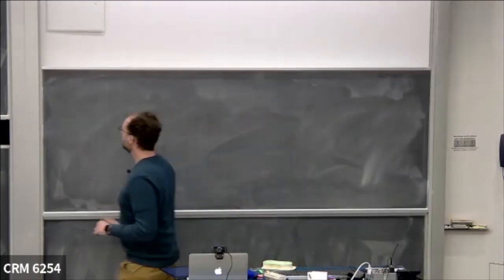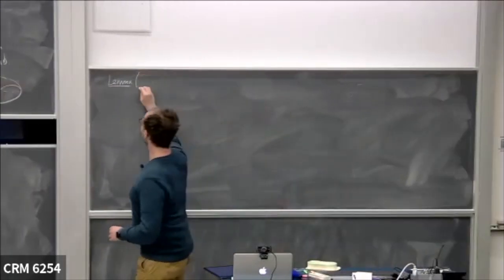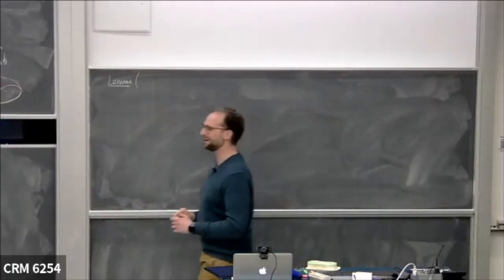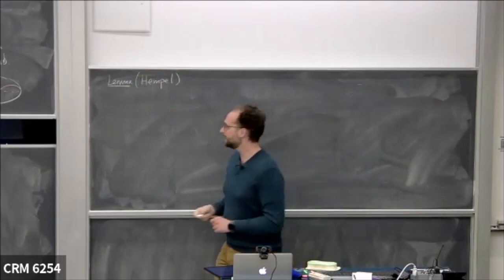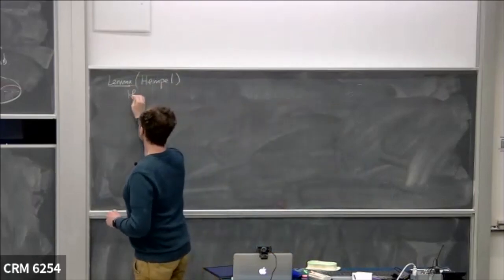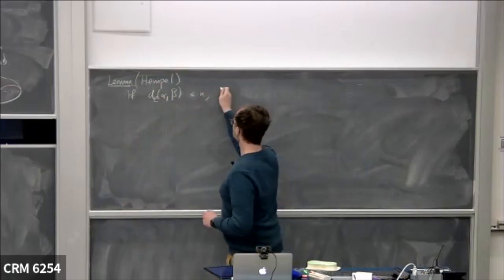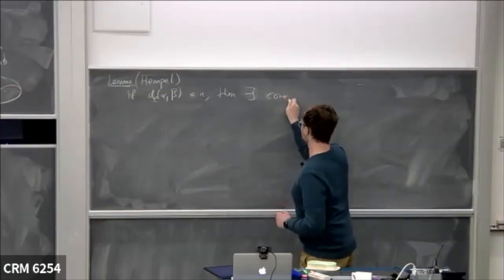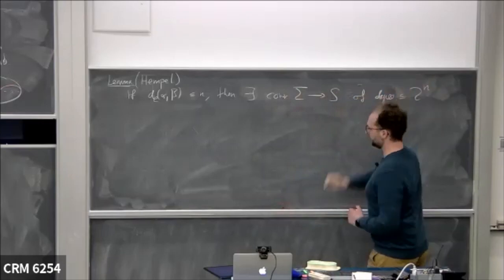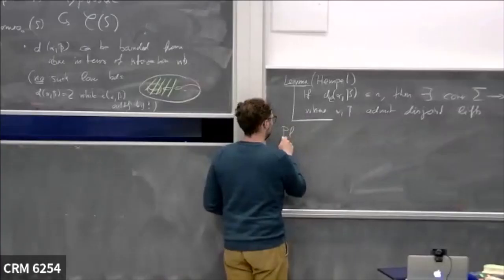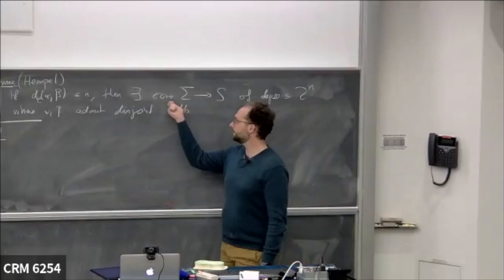Here's a cool lemma I like — this was a hidden secret for a while. It is due to Hempel, who used the curve graph to study 3-manifolds. It says: if the distance between two curves in the curve graph is at most n, then there exists a cover of my surface of degree at most 2^n where α and β have disjoint lifts. So having lots of intersections isn't good enough to get lower bounds, but having lots of intersections in covers is good enough.